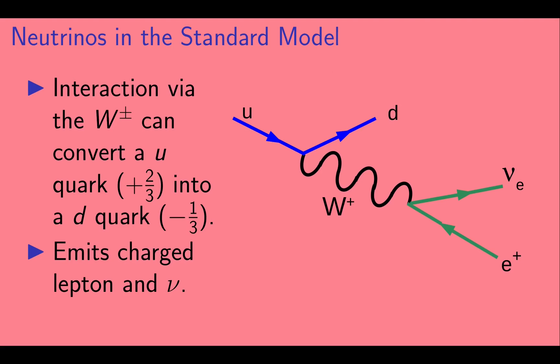The W can also interact with the quarks. Here we've taken the diagram we had before and attached a pair of quarks to the upper left corner. In this diagram, we can have an up quark, which has an electric charge two-thirds, decay into a down quark, which has a charge minus one-third, and a W plus boson.